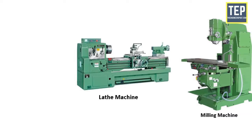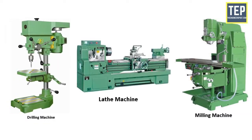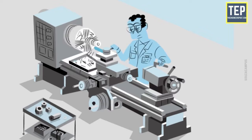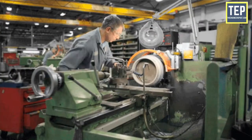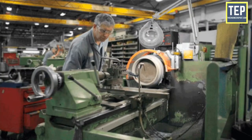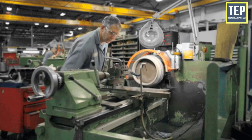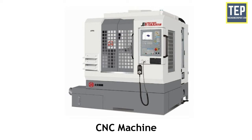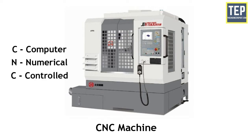Traditional machines such as lathe, milling, and drilling are done manually and have more responsibility on humans to perform these operations. They also have a higher average of accuracy and precision requirements and take a lot of time. To resolve this problem, the CNC machine was manufactured. CNC stands for Computer Numerically Controlled.